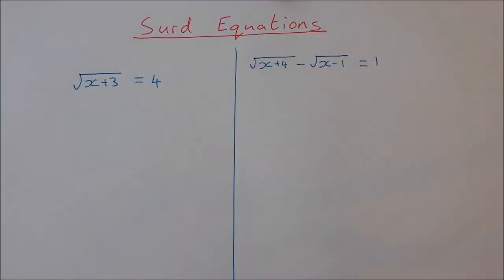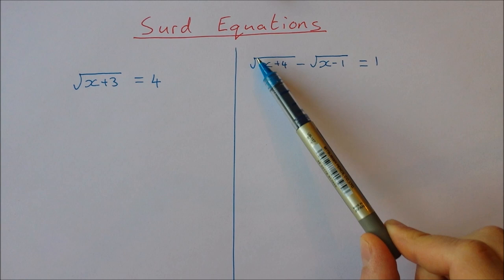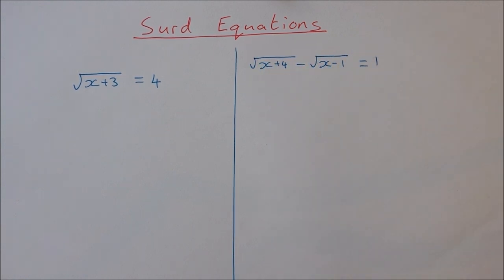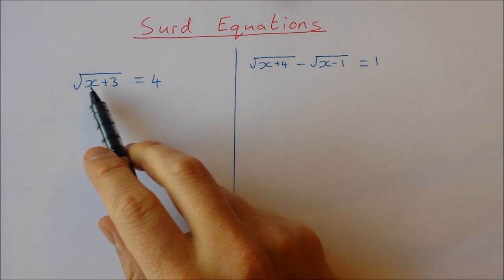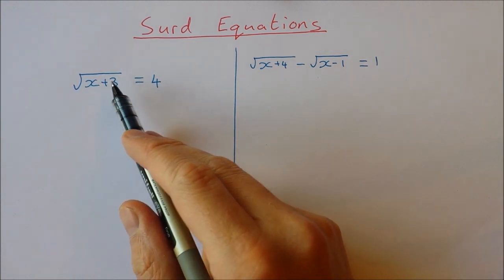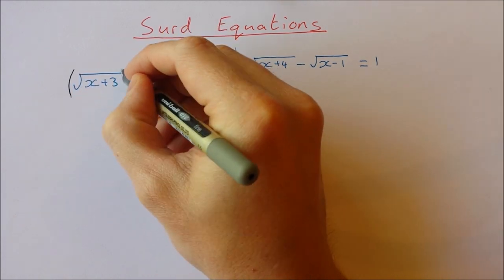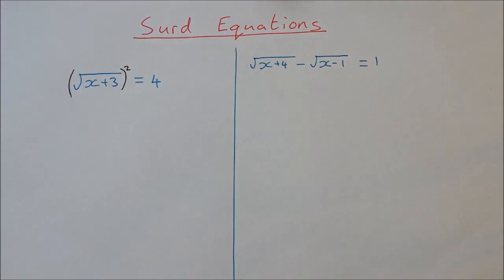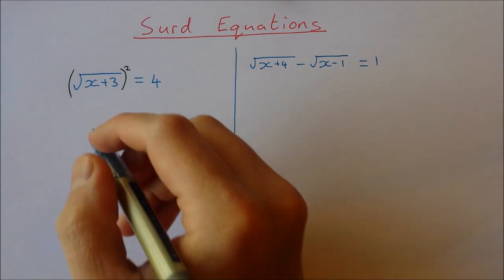In this video we're going to take a look at some surd equations that have square roots in them. We need to deal with these square roots before we can do anything else. The method we're going to use is to square them — if we square a square root, we get the expression underneath the square root sign on its own. So if I square that, I'll be left with x plus 3.